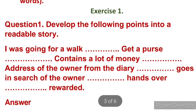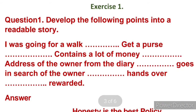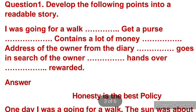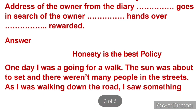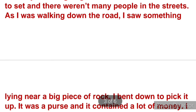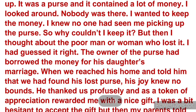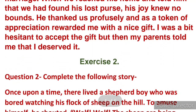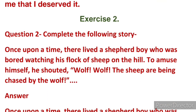Now here are three exercises. The first exercise is to develop the following points into a readable story. The points are: going for a walk, finding a purse containing a lot of money, finding the address of the owner from a diary, going in search of the owner, and handing it over to receive a reward. This story is about the moral that honesty is the best policy — a boy finds a wallet with money, feels tempted by greed, but ultimately returns it to the rightful owner who was in real need.